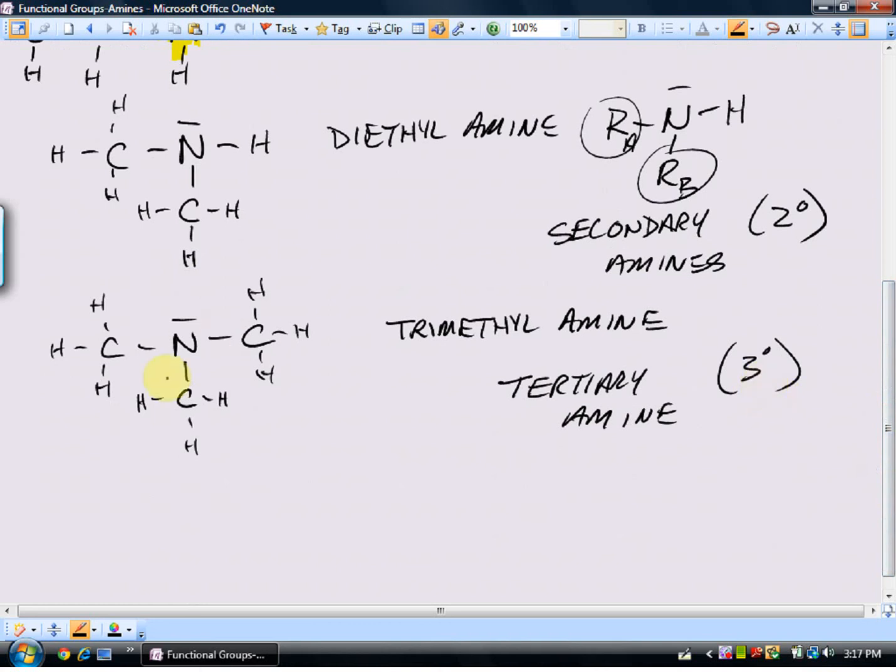If I was going to show the designation for that, the general formula for a tertiary amine would show three R groups. I'll use the designation R sub A, R sub B, or R sub C to indicate that those R groups, those carbon groups, do not need to be the same. And this would be my general formula for a tertiary amine.